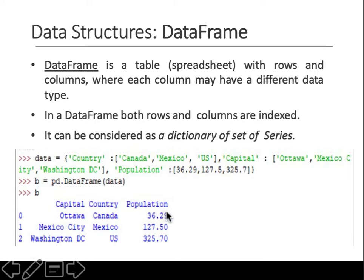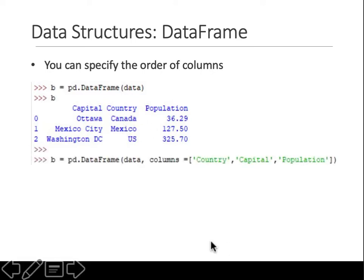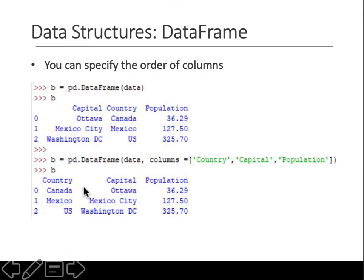The column ordering is up to the compiler's optimization, but you can specify the order yourself. When creating the DataFrame, you can pass the 'columns' argument to specify the order: country, capital, then population. If you give a specific ordering inside the DataFrame creation command, the columns will appear in that order. You can imagine this in Excel: each list entry is a row and the keys are the columns, with different data types per column.